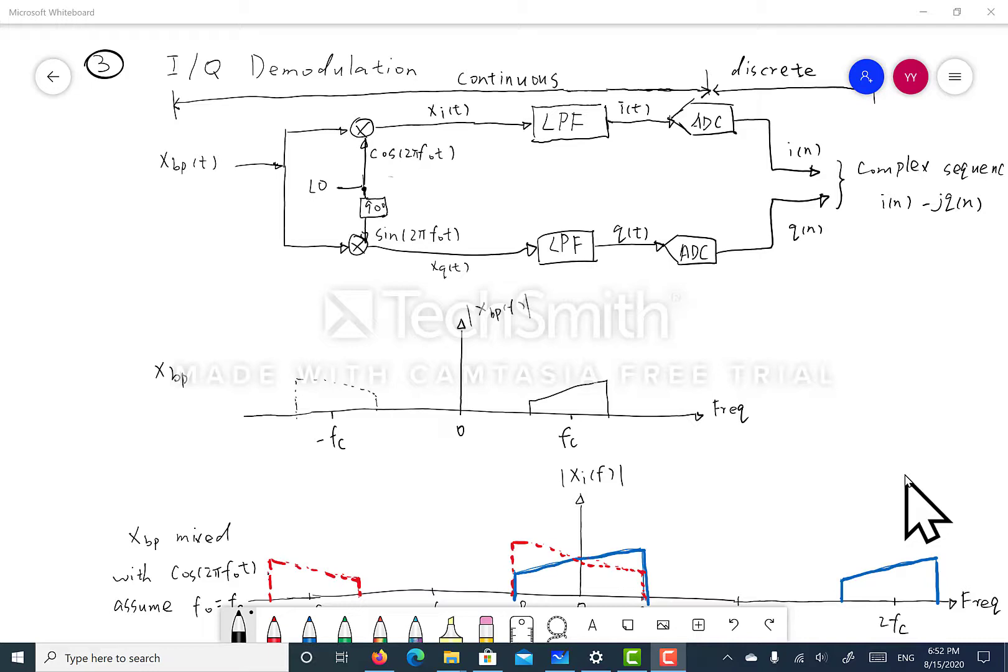Demodulation means that we want to take the incoming RF signal as an input, mix it down to a lower frequency, filter it, and convert it from an analog signal to a digital signal for post-processing.